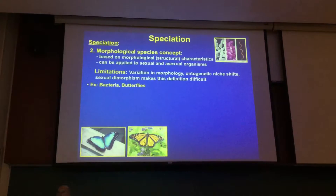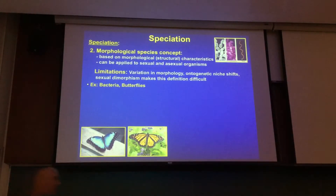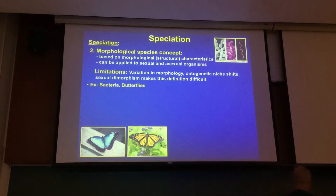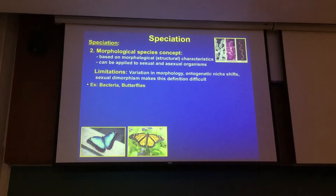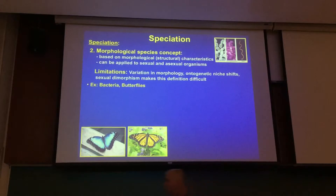Morphology lets us down a lot, and it's usually one of the most common ways to think about differences in species. First, can they reproduce with each other? That only works for a small subset. Then we look at morphology, but there are plenty of examples where that fails. In the morphological species concept, we're based on what it looks like — the structural characteristics of a particular organism.